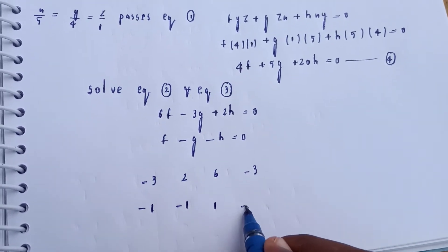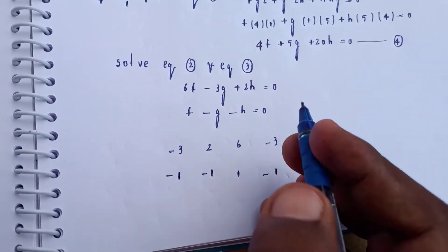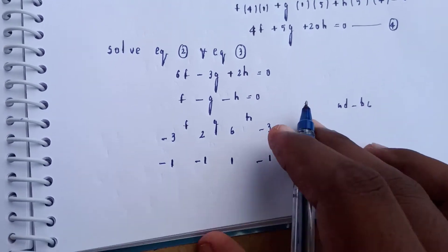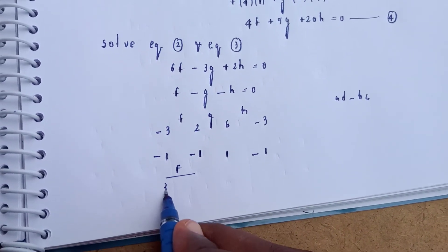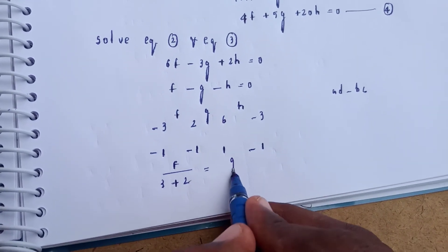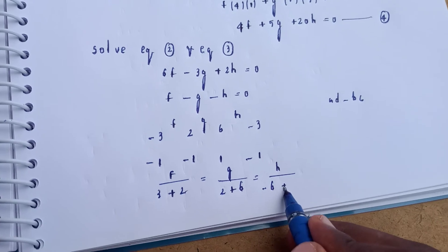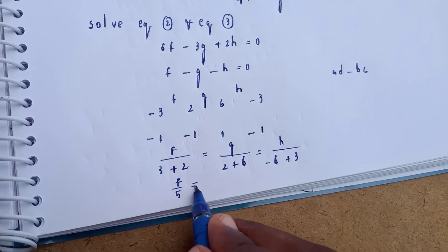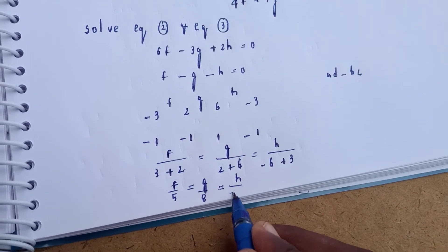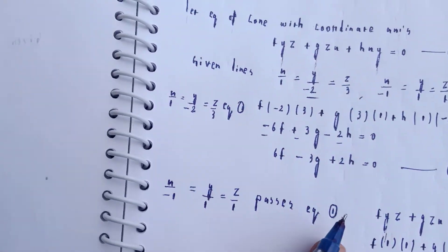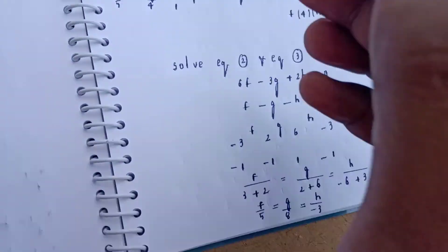Solving equations 2, 3, and 4 simultaneously using the ratio method: f/5 = g/8 = h/(−3). So f = 5k, g = 8k, h = −3k for some constant k.